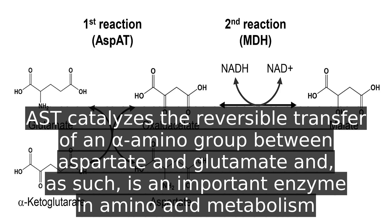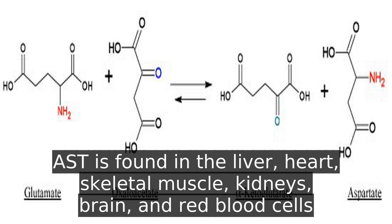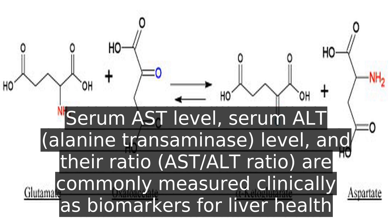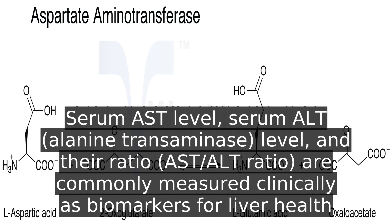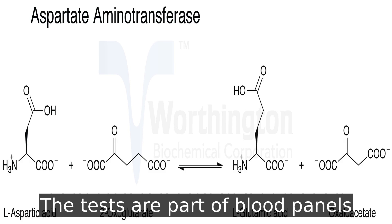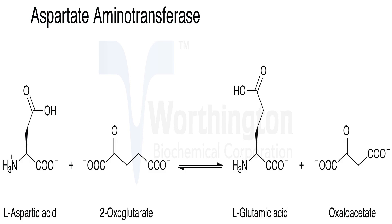AST catalyzes the reversible transfer of an alpha amino group between aspartate and glutamate and, as such, is an important enzyme in amino acid metabolism. AST is found in the liver, heart, skeletal muscle, kidneys, brain, and red blood cells. Serum AST level, serum ALT (alanine transaminase) level, and their ratio, the AST/ALT ratio, are commonly measured clinically as biomarkers for liver health. The tests are part of blood panels.